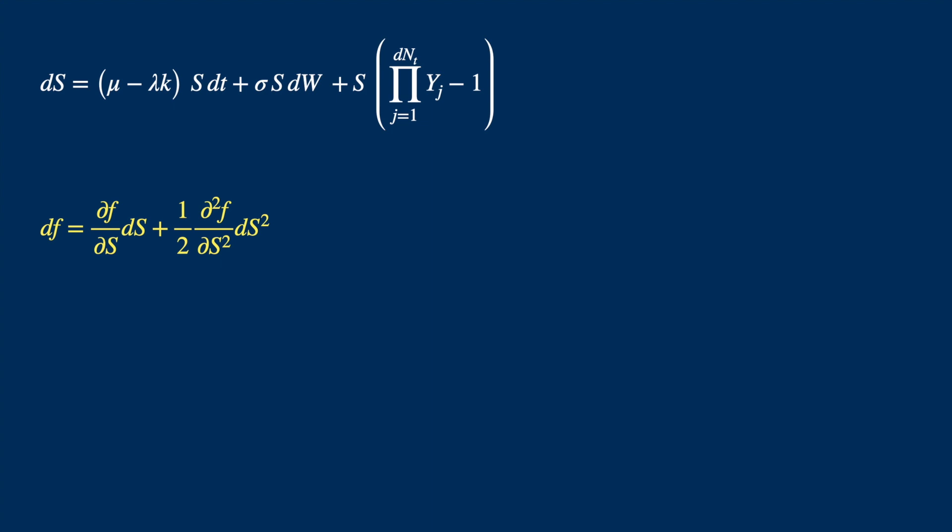We need to account for the jump, which is easy. You just add the change in the function value due to the jump. So value of f calculated using the price after the jump minus value of f calculated using the price before the jump.